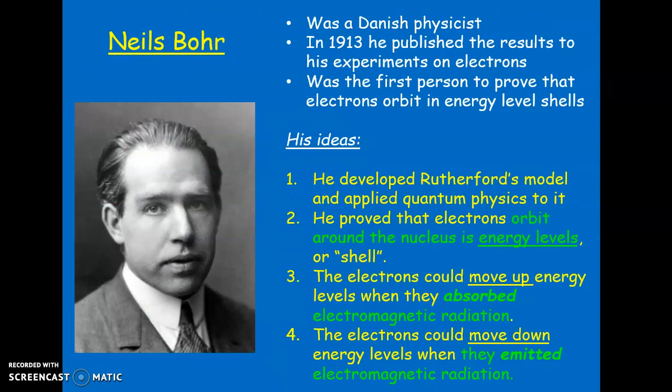Niels Bohr built on this idea and was the first person to come up with the idea that electrons actually orbit the nucleus in certain energy levels. He said that electrons can only fit in certain shells or orbits. When they absorb electromagnetic radiation, they move up an energy level. When they give out electromagnetic radiation, they move down an energy level — they move down shells.